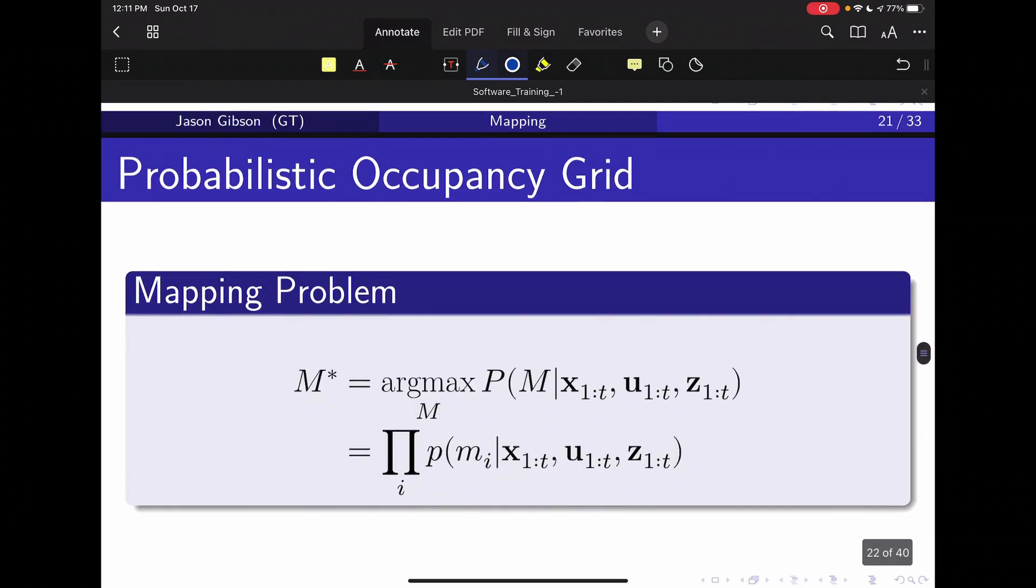So using that third assumption, we can do this here. So we're trying to figure out what our map is, and this capital M represents the entire map. So what is the best map—because remember the star represents best—and that is going to be the map such that the probability of the map given our history of states, our history of controls, and our history of sensor readings. What map makes the most sense given our probabilistic representations of everything.